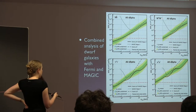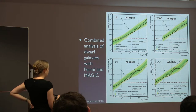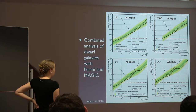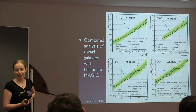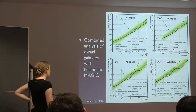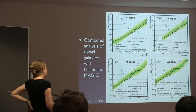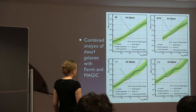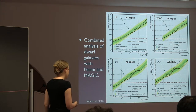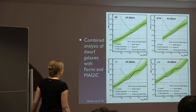Here are results for other channels: annihilation to W bosons and annihilation to muons. For W bosons the constraint would be at about 100 GeV dark matter mass, but lighter dark matter can't annihilate into W bosons. The muon final state is a case where you don't produce neutral pions and so don't produce many photons — the bounds are much weaker and don't intersect the thermal relic line until you're down around 10 GeV.